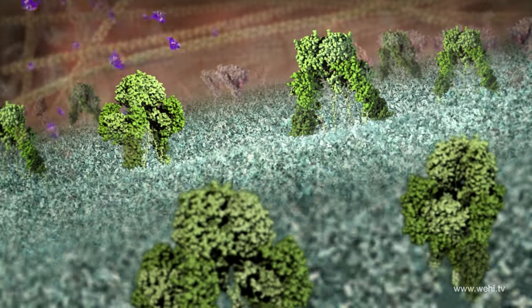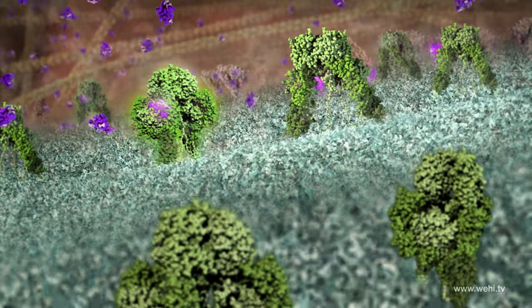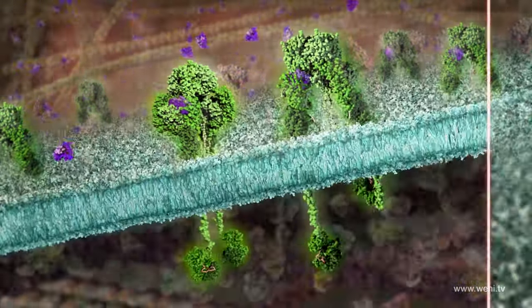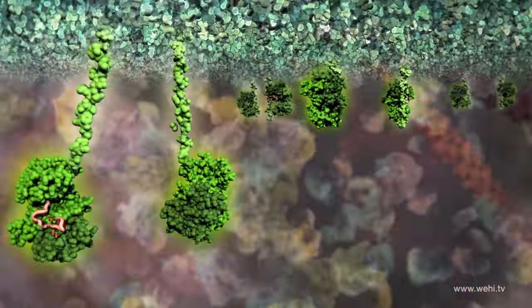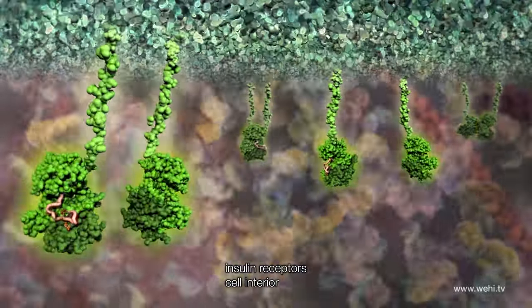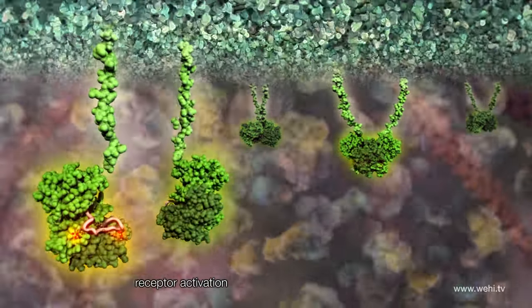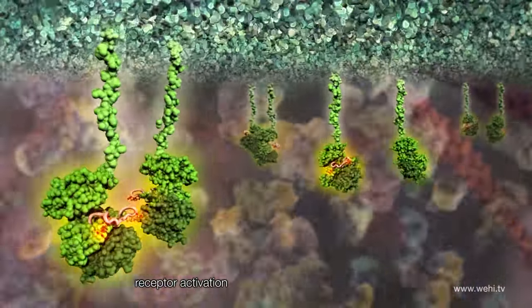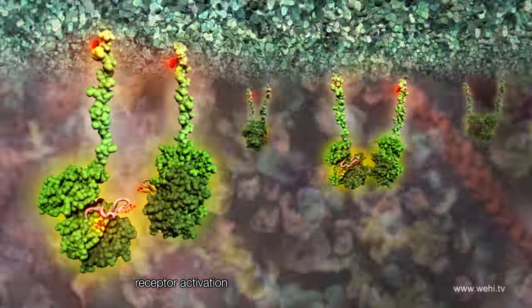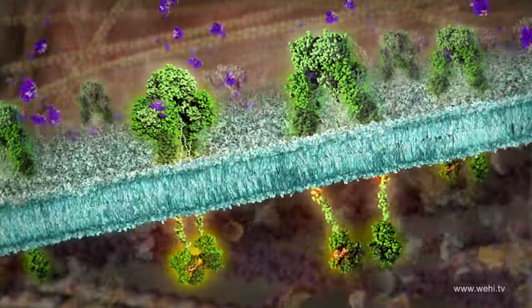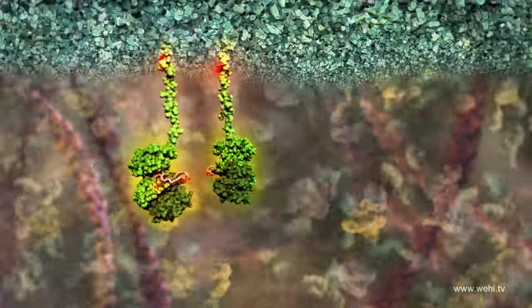When insulin binds to the outside parts of the receptor it brings the two halves of the receptor together and at the same time the two parts inside of the cell unwind and make contact. These two proteins then activate each other. This activation allows the insulin signal to enter the cell.